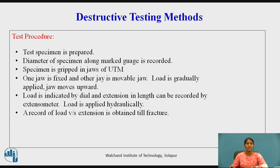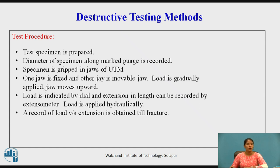The specimen is prepared and the gauge length is measured. The specimen is gripped between the two jaws of the UTM, that is the universal testing machine. One jaw is fixed whereas the other jaw is movable.